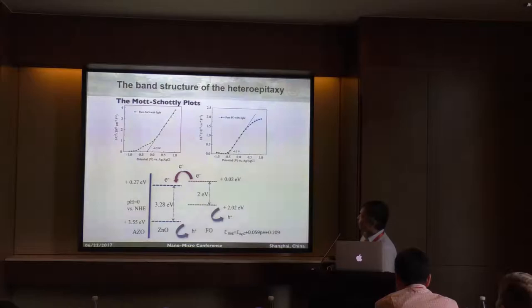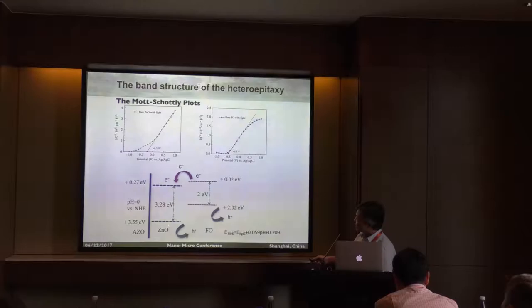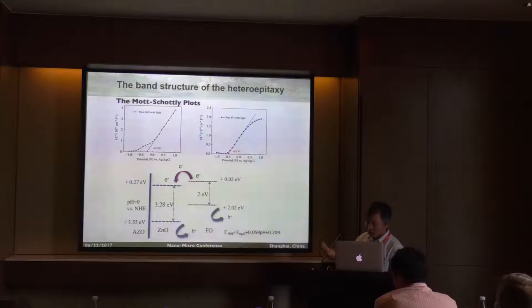The next question is: when you combine these two materials together, what happens? We check the Mott-Schottky plot and combine it with the optical band gap to draw a band structure. What really happens is that when you shine light, the electrons generated in the conduction band will move in one direction, and the holes will move to the other side. This is the picture we have — that means when you combine these two materials, you expect the PEC performance to be enhanced.